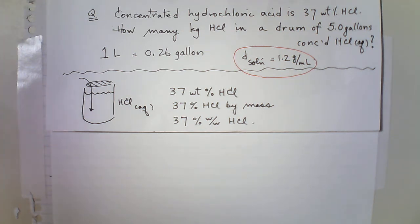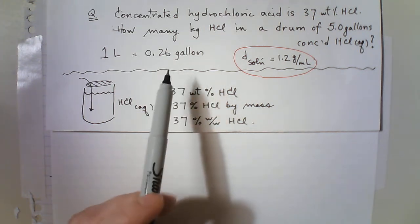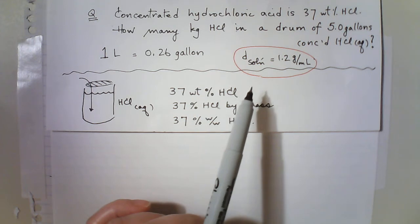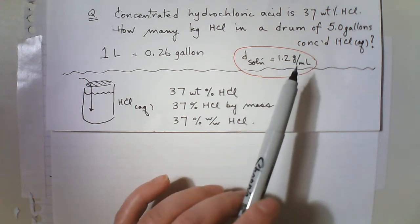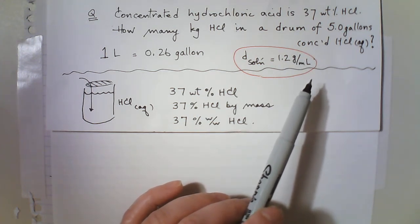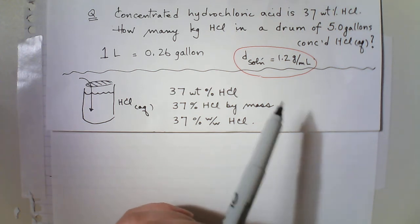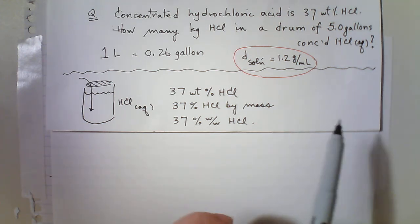Okay, so how would we answer this question? A lot of people are asking me, where do I start? Do I start with density? Do I start with the 37, 5 gallons, 37 over 100? Where do I start?